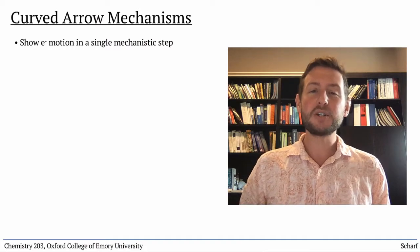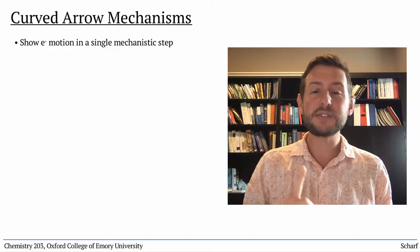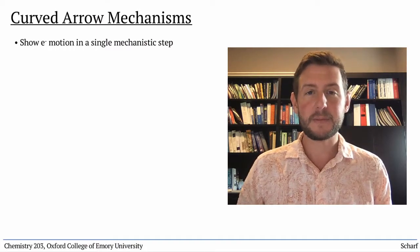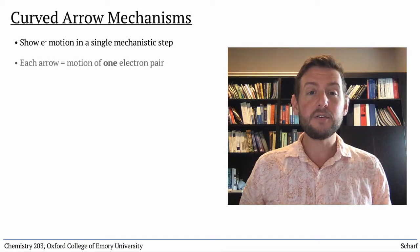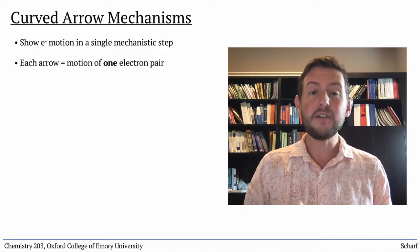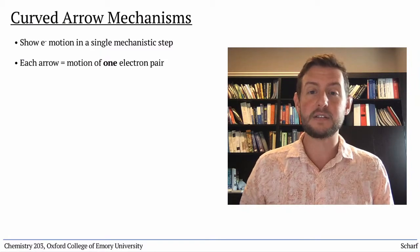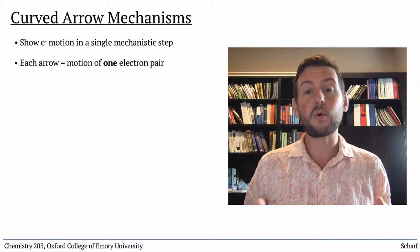Curved arrows show the motion of electrons during a single step in a chemical reaction. Every arrow shows the motion of a single pair of electrons and makes and/or breaks a bond.